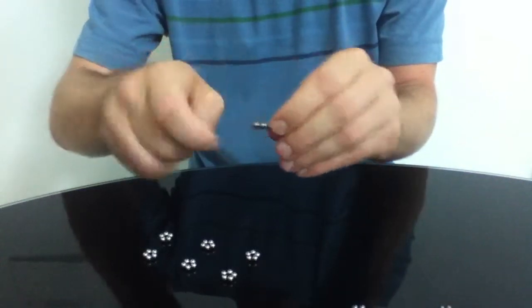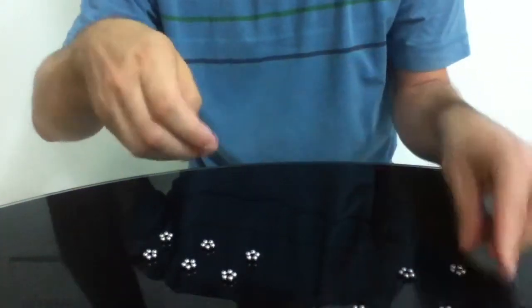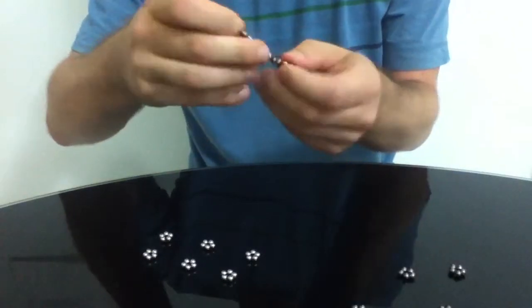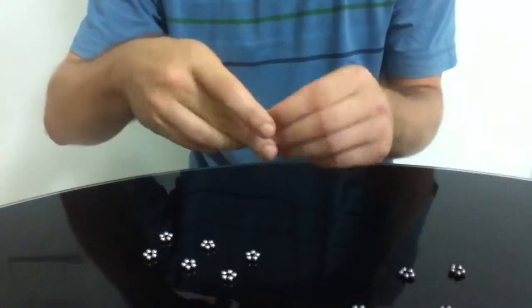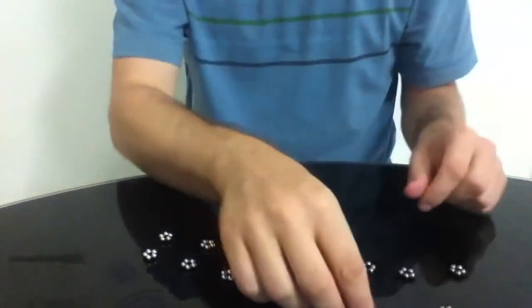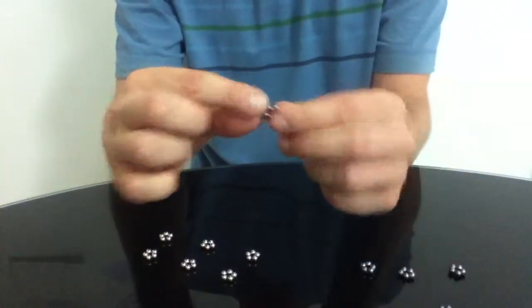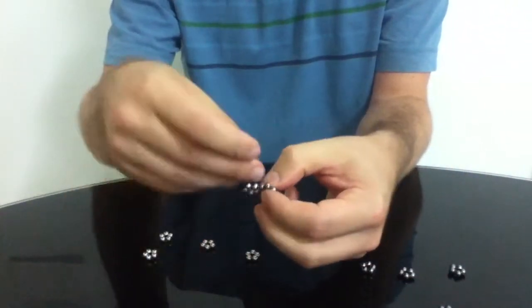So I'm going to make six black and six nickel. They're not really black, are they? I don't know. Dark. And there we go. Okay, so you take one of these, the dark ones, and I'm going to surround it by the light ones.